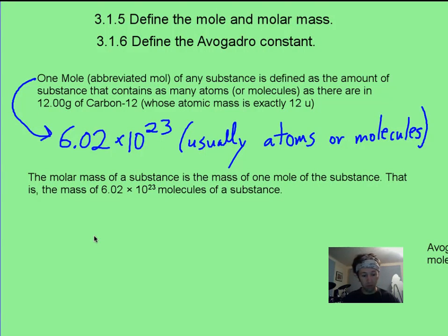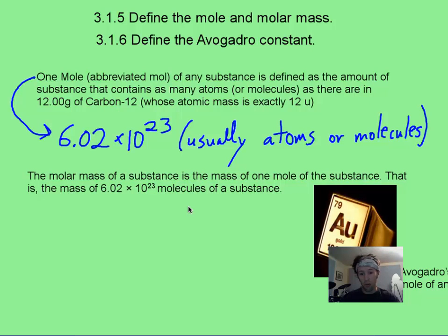For example, if we want to know the molar mass of gold, we look at the periodic table, and usually, the big number down here in the bottom with the decimal, that tells us one mole of any substance is going to weigh this much. For example, gold weighs about 197 grams to have one mole of it, or this many atoms.